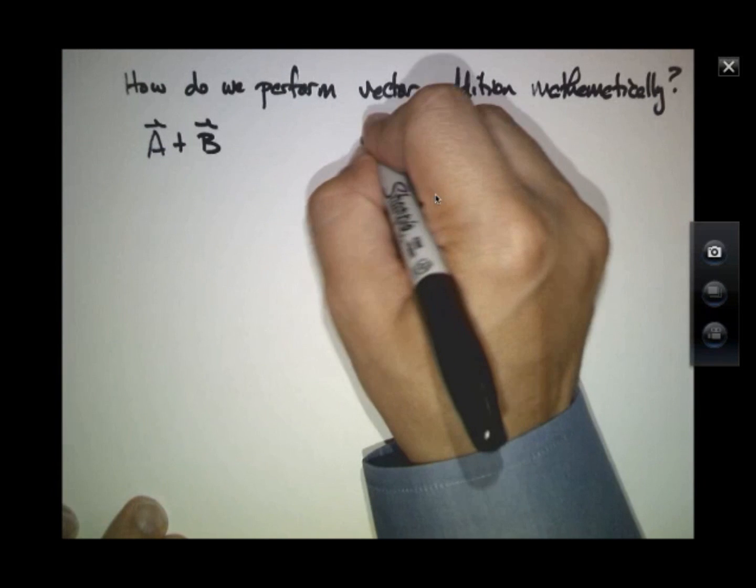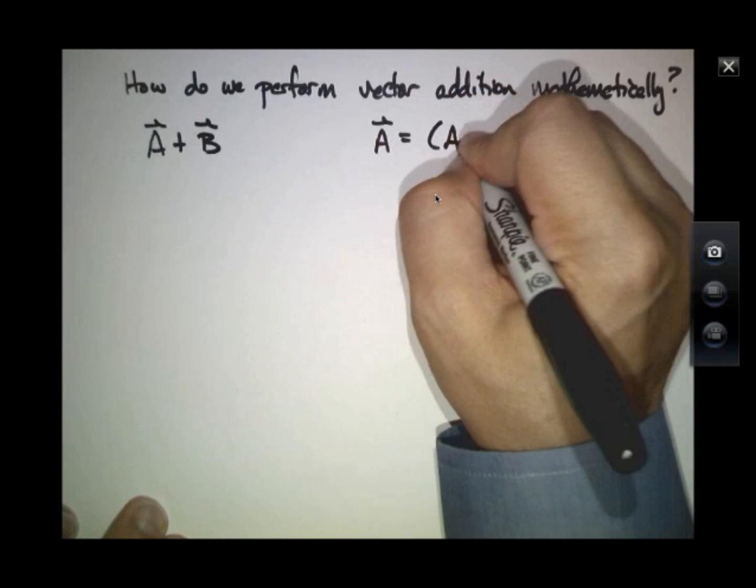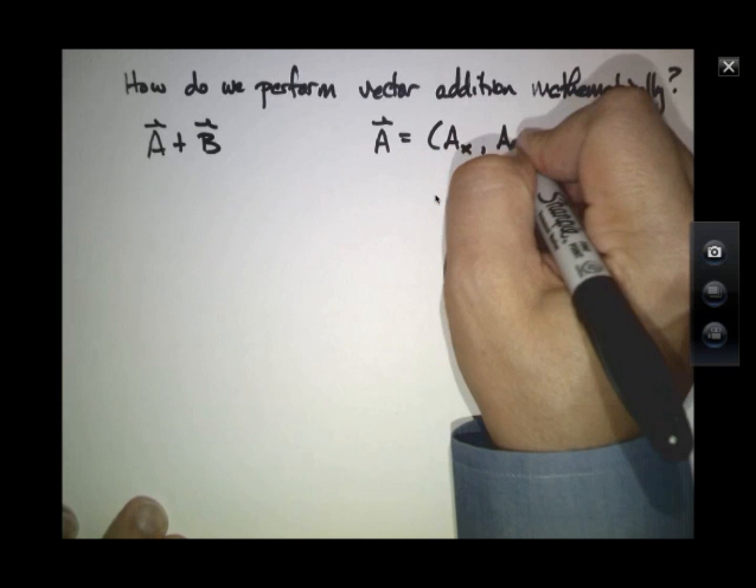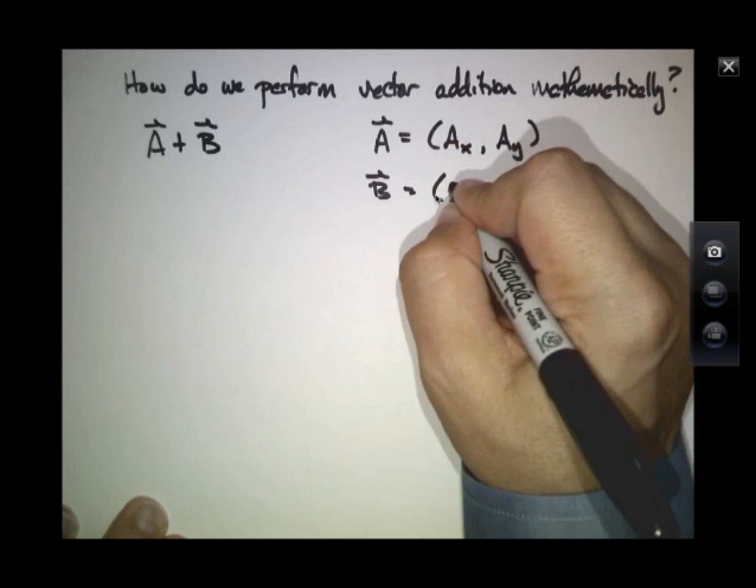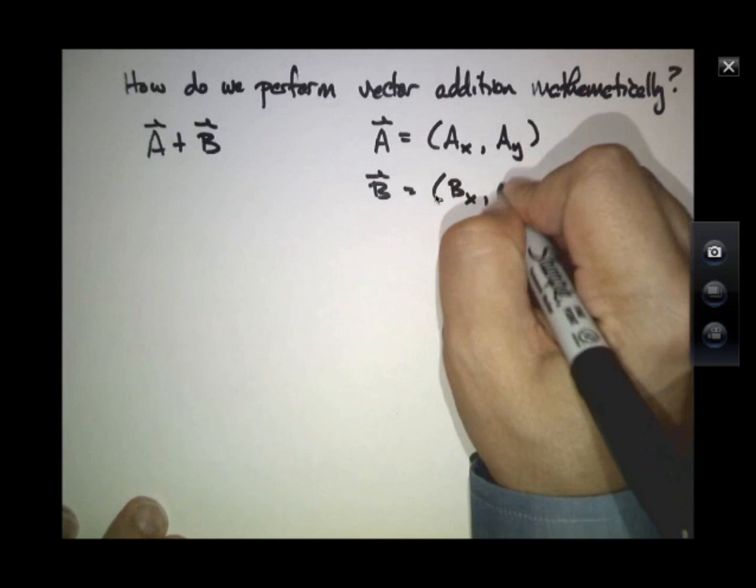and A is defined as this ordered pair AX and AY, and B is this ordered pair BX and BY,